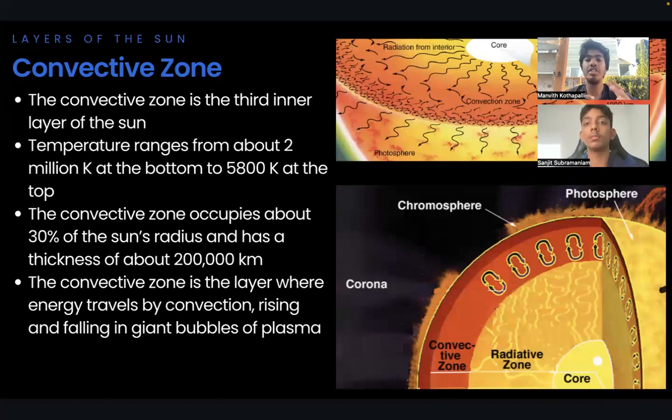The convective zone occupies about 30 percent of the Sun's radius and has a thickness of 200,000 kilometers. The convective zone is a layer where energy travels by convection, rising and falling in giant bubbles of plasma. The convective zone is also composed of plasma, but less dense than the radiative zone.